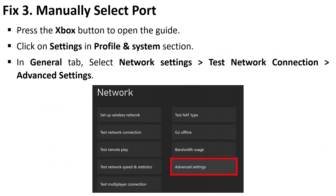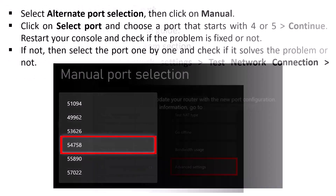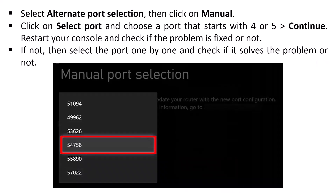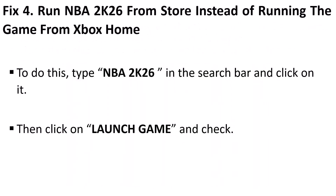Fix 3 is to manually select a port. Go to Settings, in the General tab select Network Settings, then Test Network Connection, then Advanced Settings. Select Alternate Port Selection, then click on Manual. Click on Select Port and choose a port that starts with 4 or 5, then continue. Restart your console and check if the problem is fixed. If not, select ports one by one to find which one works for you.